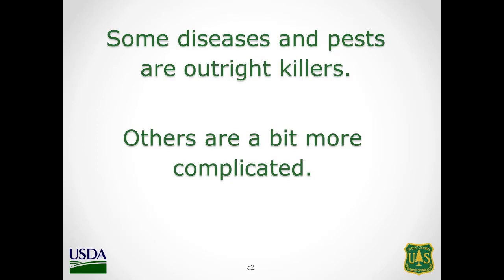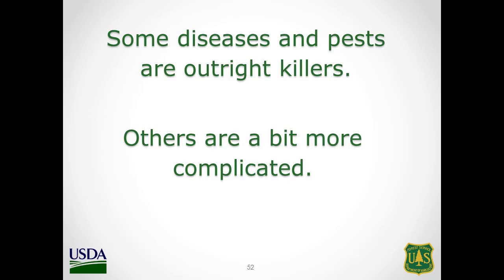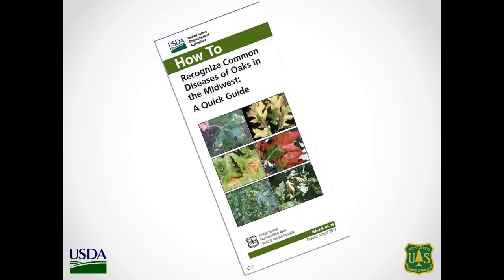There's a whole range of pests affecting oaks. Some diseases and pests are outright killers — oak wilt is one example. And some are more complicated. Among the current threats: oak wilt disease, oak decline, bur oak blight, oak tatters, other herbicide issues, rapid white oak mortality, insect defoliation — all these different things hitting our oaks may also be connected to oak decline, which I hope to cover in the next few minutes.